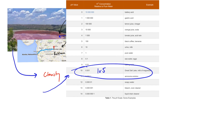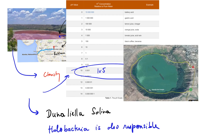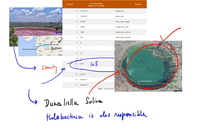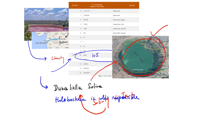A certain group of algae thrives here, and the name of that algae is Dunaliella salina. Apart from them, there are other algae also. In normal times, they give a green shade to the lake — which we believe to be the normal color — however, that green color is also due to algal growth.